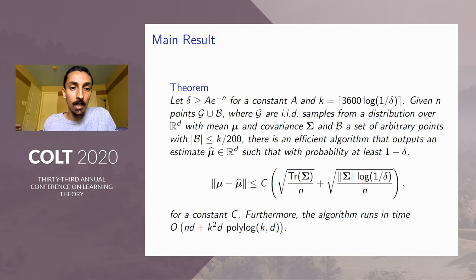So here's our main theorem statement. The full details are in the paper. The main takeaway is just that we designed an algorithm which achieves the sub-Gaussian performance, possibly with some worse constant in front. And our running time is order n·d plus roughly k^2·d. So k here is the number of buckets which is always at most n.